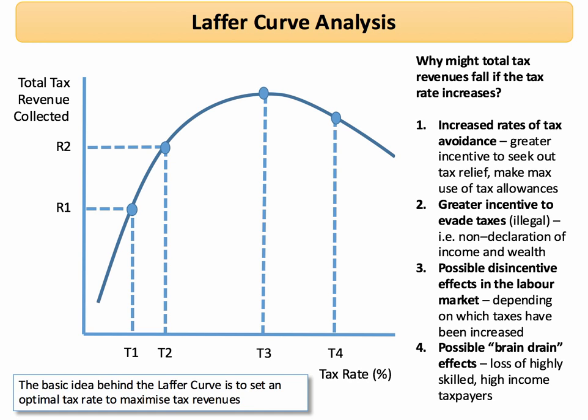So why might total tax revenues actually decline when the tax rate increases from t3 to t4? There are various explanations. One is that if you increase the tax rate, there's a greater incentive for people and businesses to avoid taxation. People have an incentive to employ a tax lawyer to make optimum use of their tax relief and allowances, and businesses may find all kinds of different ways to avoid paying taxation.